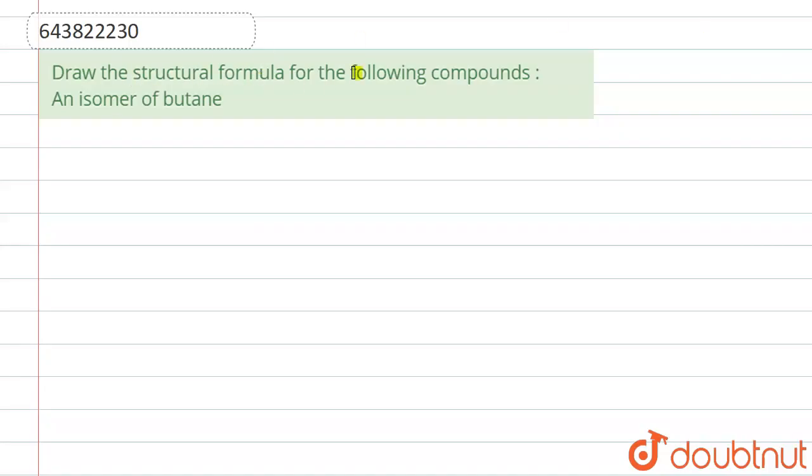Hello everyone, this is the question: draw the structural formula for the following compound, an isomer of butane. First of all, we know that isomers are the compounds having same molecular formula but different molecular structure.